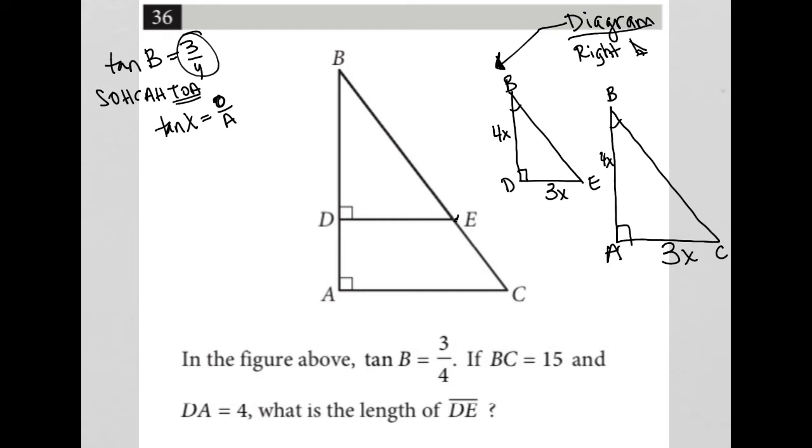The next thing we are told is that BC equals 15. So, that's very useful. Here is 15. And I should make a note here that I have all three sides here.